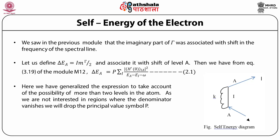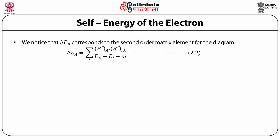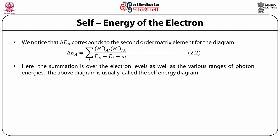As we are not interested in regions where the denominator vanishes, we will drop the principal value symbol P. We notice that delta Ea corresponds to the second order matrix element for the diagram where an electron comes, emits a photon, absorbs it again in the intermediate state and goes back to the original value. This gives the matrix element delta Ea as sum over the intermediate states I of H prime matrix element between A and I and H prime between I and A divided by E_A minus E_I minus omega, where the summation is over the electron levels as well as the various ranges of photon energies. The above diagram is usually called the self-energy diagram where an electron or a particle emits a photon and reabsorbs it. The photon is a virtual photon.